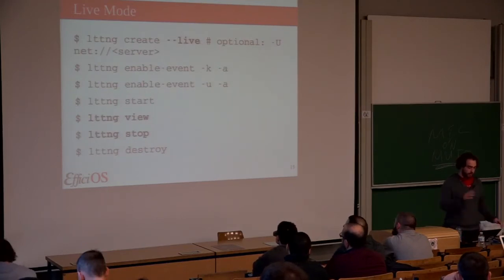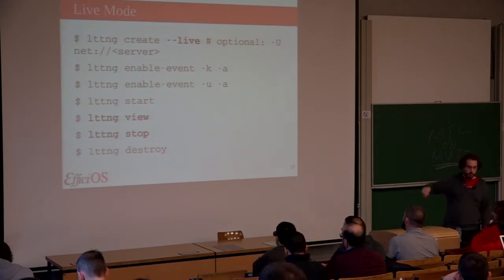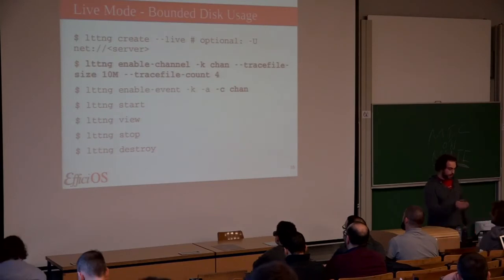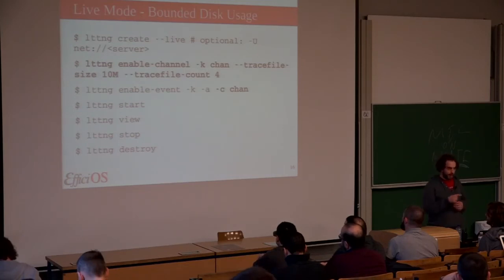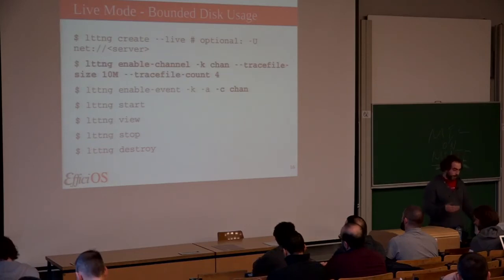The big difference between the first mode and live mode is that you attach live on session creation and you can process the trace while it's running instead of having to stop and then process. You can also send the trace to a remote server. For bounded disk usage, you can configure your channels to use only a limited number of files — for example, four files of 10 megabytes, rotating across those four files per CPU — giving you at most 40 megabytes per CPU of disk usage.